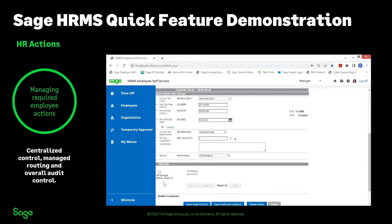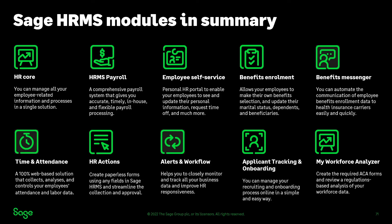And if you're using Sage HRMS payroll, that will correspond and synchronize into the pay code and update that. Remember, this is also creating a historical record so you know who made that change, and there's an auto log within HR Actions so you can see who made that final approval. Thank you for watching and be sure to watch the many other highlight videos for Sage HRMS Premium.